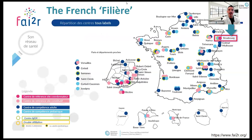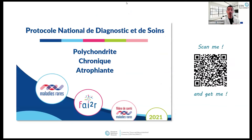You may not know about the French filière FAI2R, which tries to create something quite similar — a network of care centers and expertise for rare connective tissue diseases. I'm working in Strasbourg, in the northeast of France, and we are one of the few reference centers for the disease. Within this network, we are trying to make French recommendations, and this is really what this talk is about.